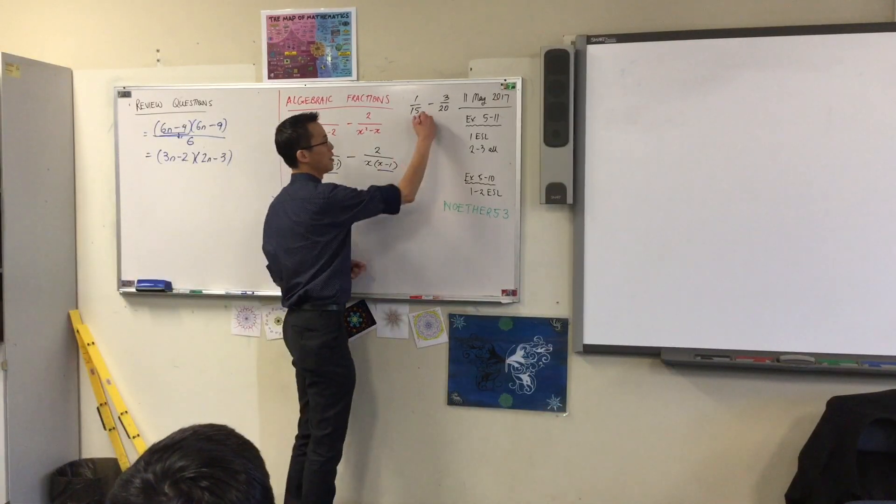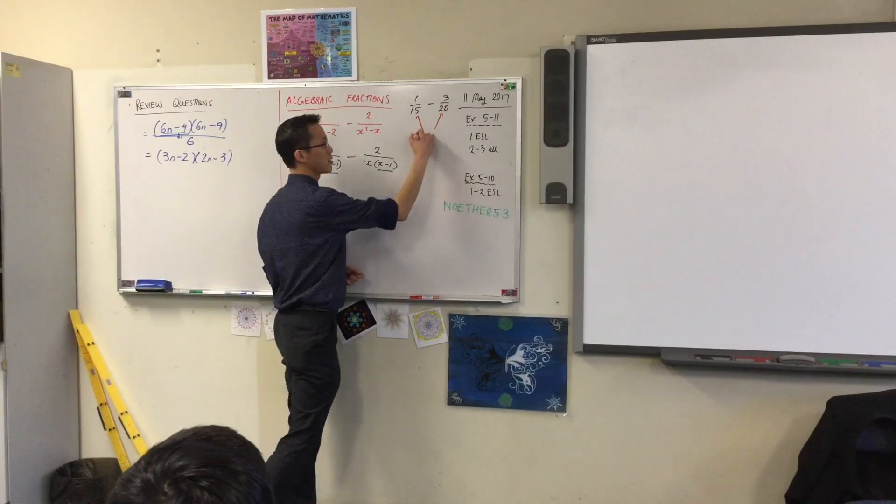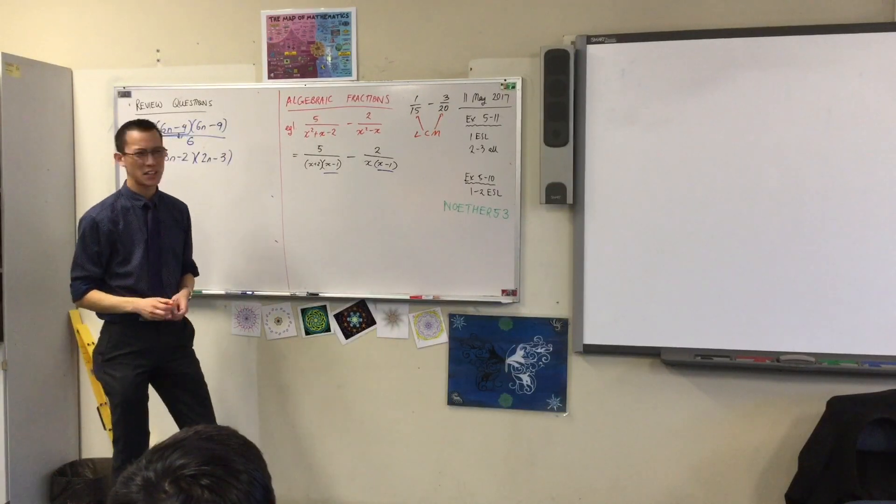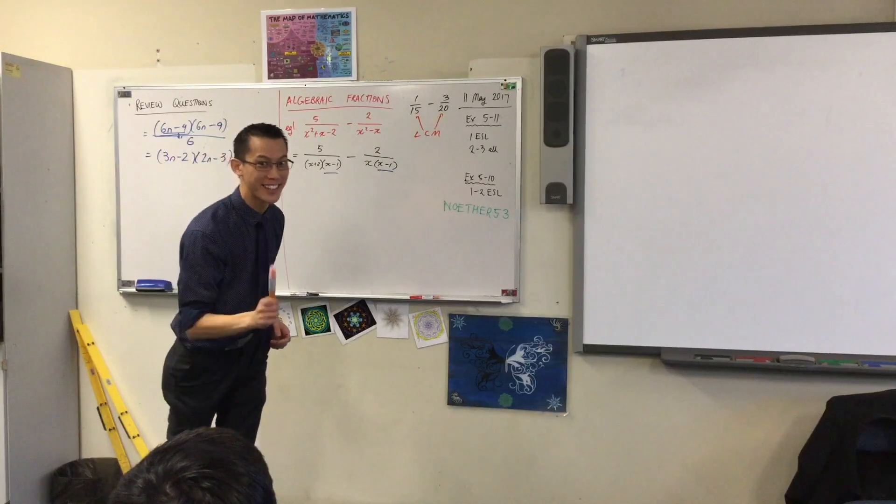I'm actually searching for, not the product of these two things, but the lowest common multiple. What is the lowest common multiple? 15 and 25. Lowest common multiple. Not factor. Alright?